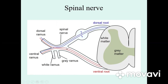In the place where the anterior and posterior roots join, this part of the nerve is named the spinal nerve. The spinal nerve goes through the intervertebral notch and is divided into the anterior branch, or ventral ramus, and the posterior branch. The anterior branches of the four superior cervical nerves join together and make the cervical plexus.